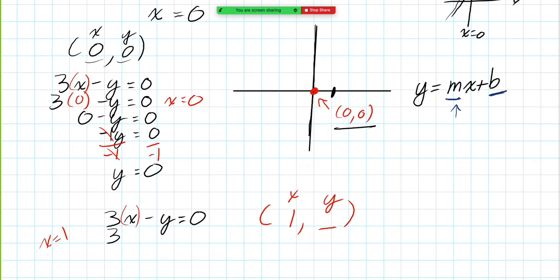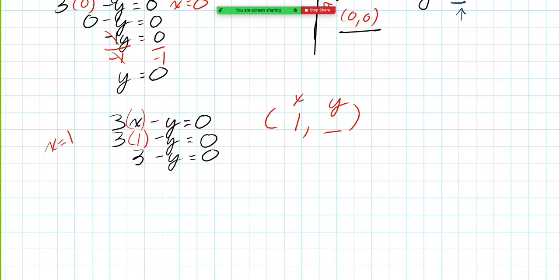In order to do that, we're going to replace x with the number 1. We get 3 times 1 minus y is equal to 0. 3 times 1 gives us the value of 3 minus y equals 0. So this is a little trick here now. I need to move 3 to the other side. Technically, 3 is positive here. So what I'm actually going to do is subtract by 3 on the left-hand side of the equation. And then on the right-hand side, I'm also going to subtract by 3.